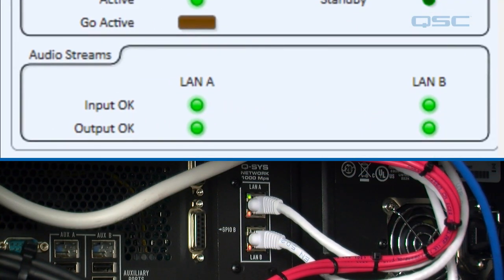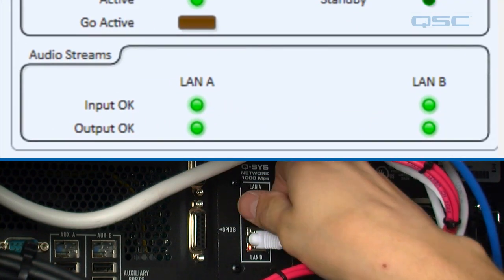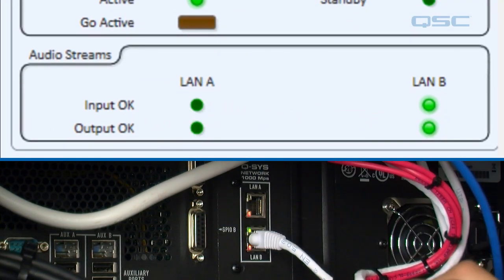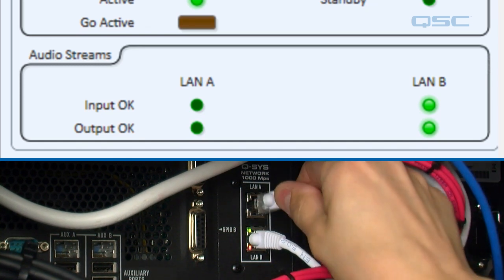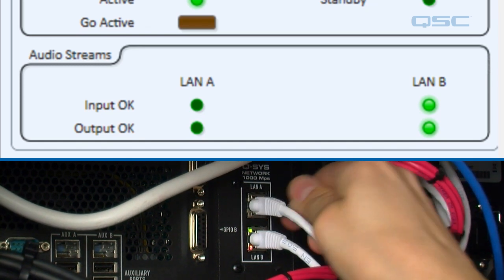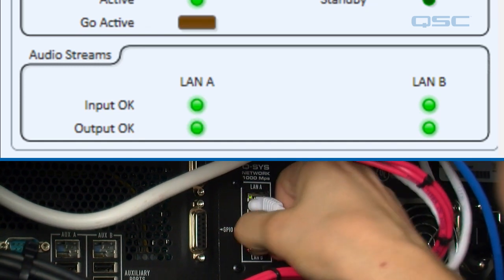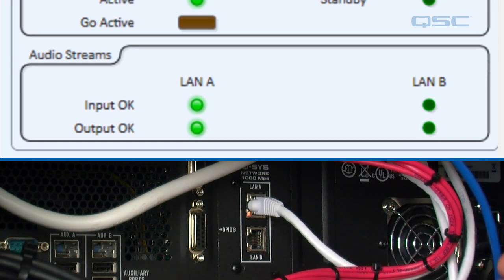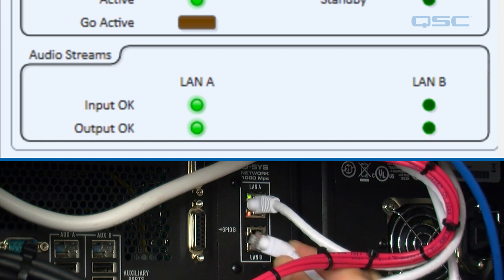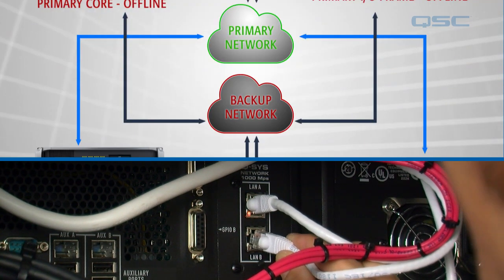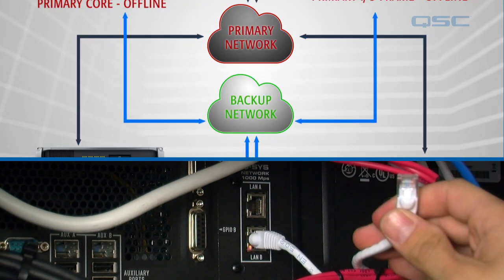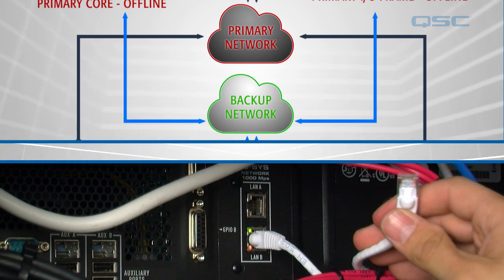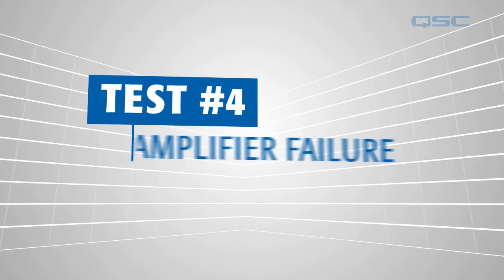We can also unplug the Ethernet cable, and because this network is redundant you'll notice that we won't have any audio dropout as long as one cable is plugged in. We can take one out, trade one in for the other, and the audio will continue uninterrupted.